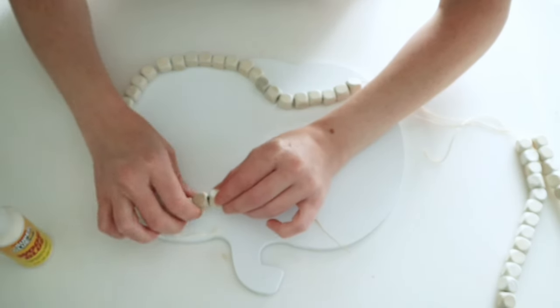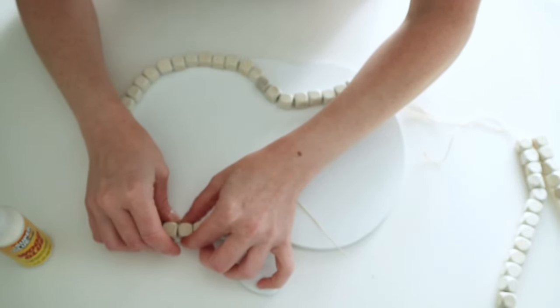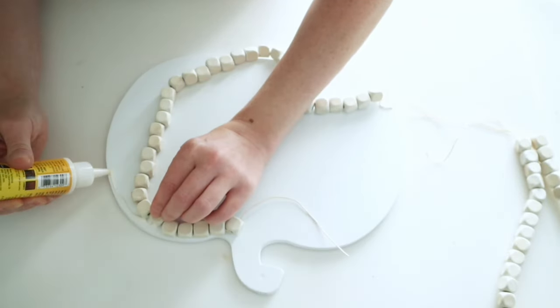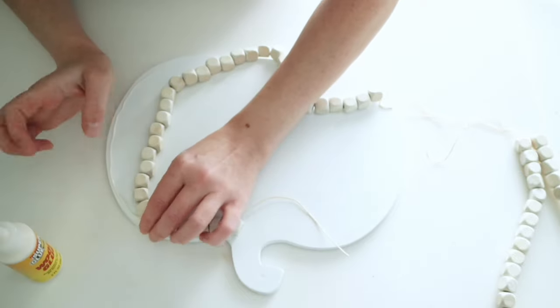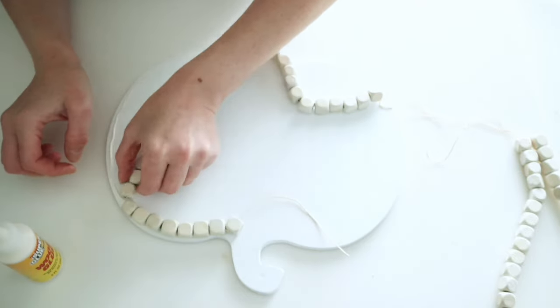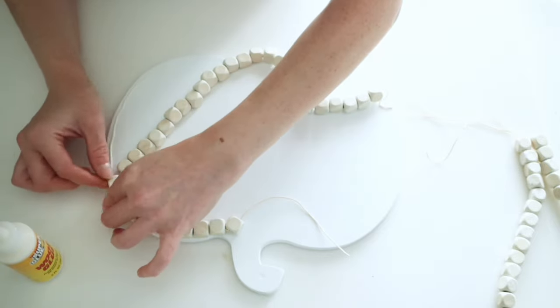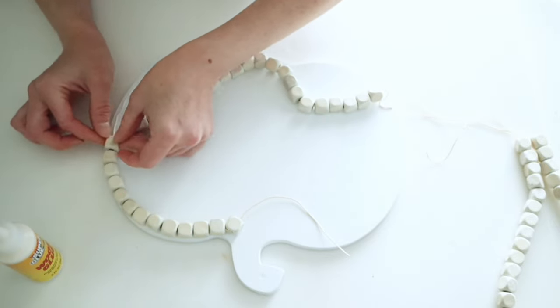Then I'm just going to go ahead and use some more of that wood glue to start adding my beads to the edges of the pumpkin. Now you can see I left this on the little piece of twine that the beads were on. It just made it a little bit easier for me to work with.